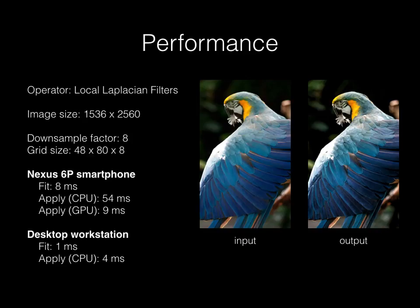Here are some representative performance numbers for our fast solver. Different downsampling factors and grid sizes give different trade-offs, but for all our examples, 8x downsampling is a good balance. For a 4MP image, fitting curves is fast, even on a smartphone. Runtime is dominated by running the operator at low resolution.